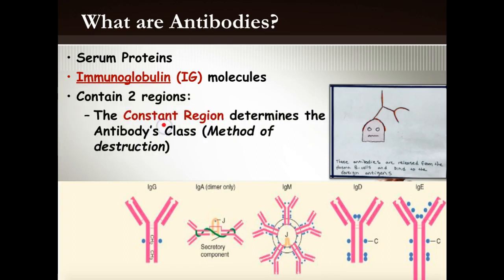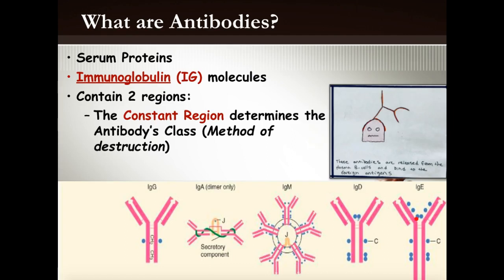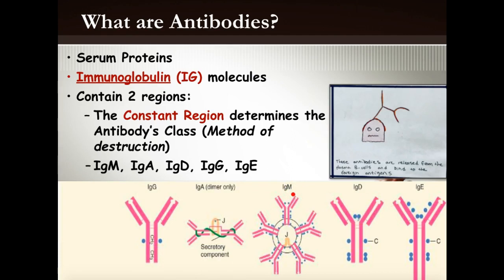Plasma cells produce one of several types of antibodies, which are called immunoglobulins — a descriptive term. Antibodies contain two regions: a constant region that determines their class, and a variable region. There are five different classes, and a mnemonic to remember them is the woman's name MADGE: M-A-D-G-E. Each class functions a little differently and has different capabilities.